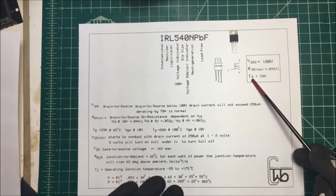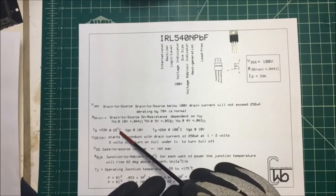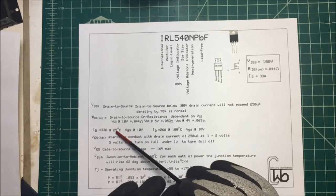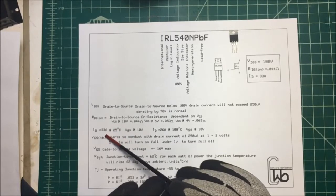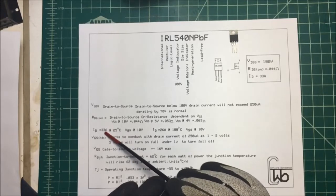Now let's take a look at this drain, 33 amps they say, the current on the drain here. Well that's at 25 degrees centigrade, that's room temperature. That's never going to happen unless you can dissipate all the heat away from this unit.